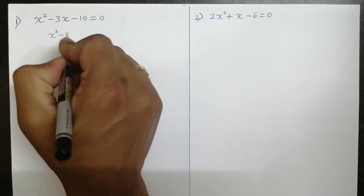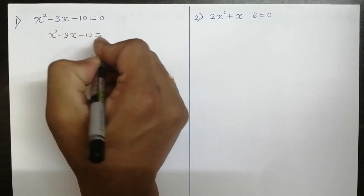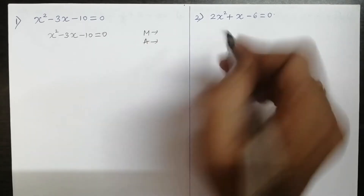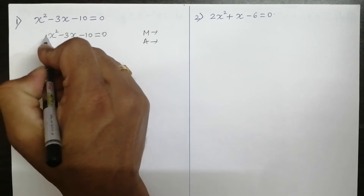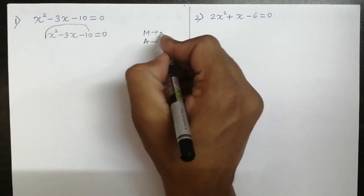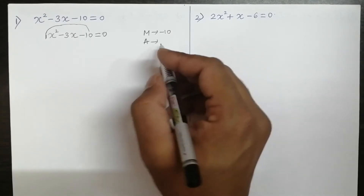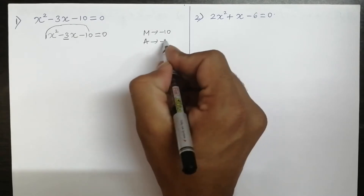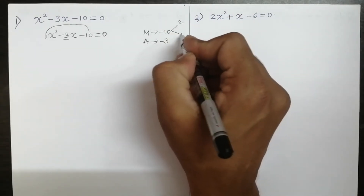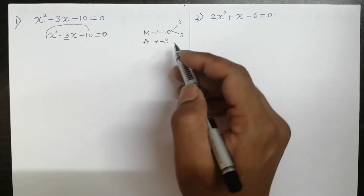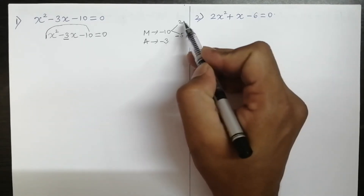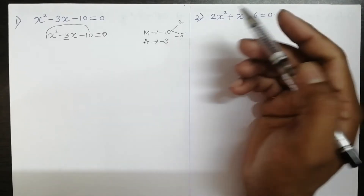We write the expression: x² - 3x - 10 = 0. To apply the factorization method, we split the middle term. We need two things: multiplication and addition. Here, the coefficient of x² is 1, so multiplication is 1 × (-10) = -10, and addition needed is the coefficient of x, which is -3. Factors of 10: 2 and 5. If I give minus sign, then +2 + (-5) = -3 and +2 × (-5) = -10.